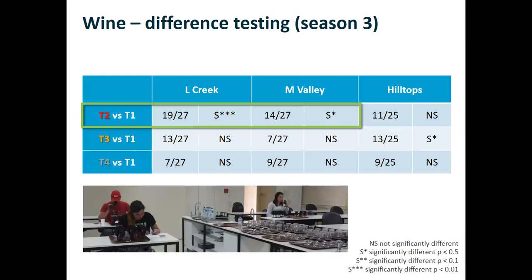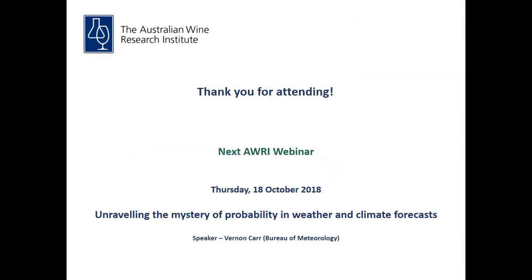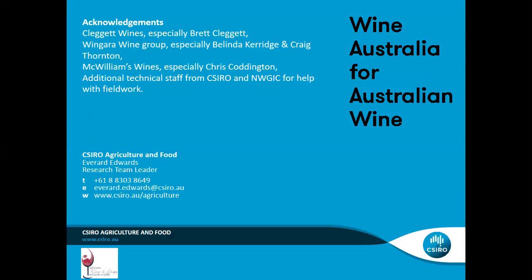Another question: if we trim off the canopy at EL32, will this reduce the functionality of the retained leaves, resulting in reduced carbohydrate transfer into the bunches? This may explain the reduced color and tannins in the grapes at harvest. Also, leaves are only functional for about 100 days as a net exporter of carbohydrates.